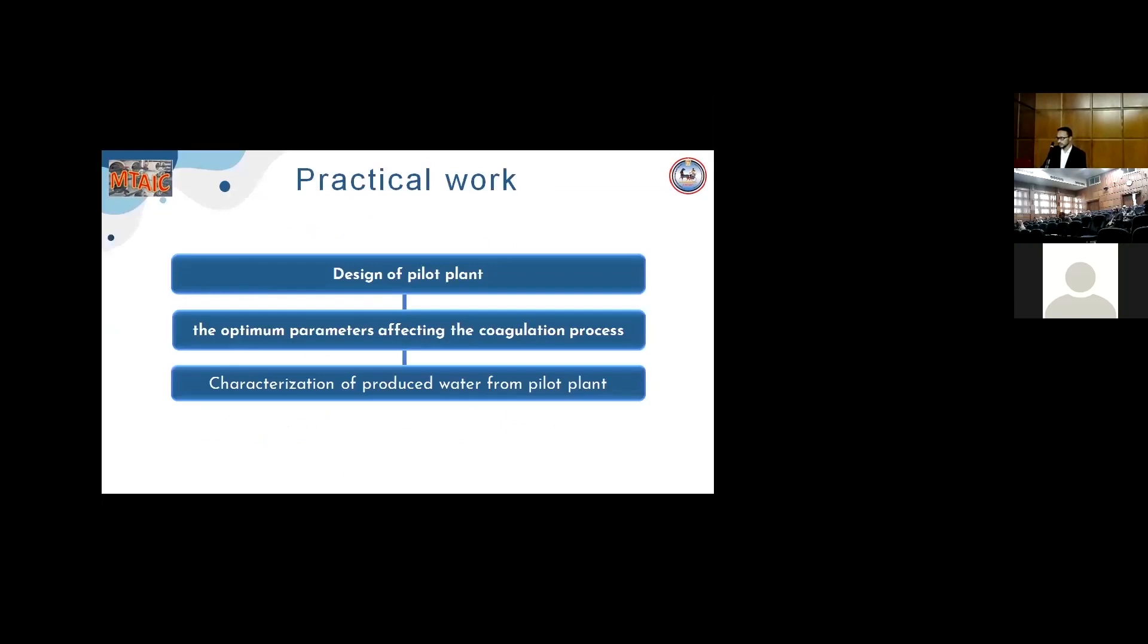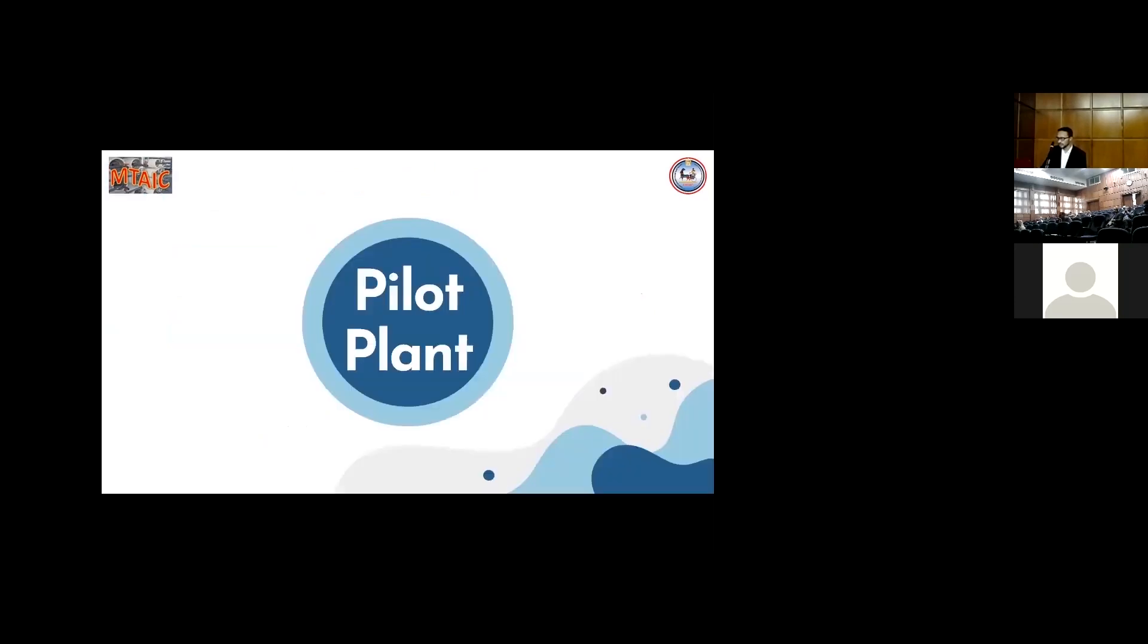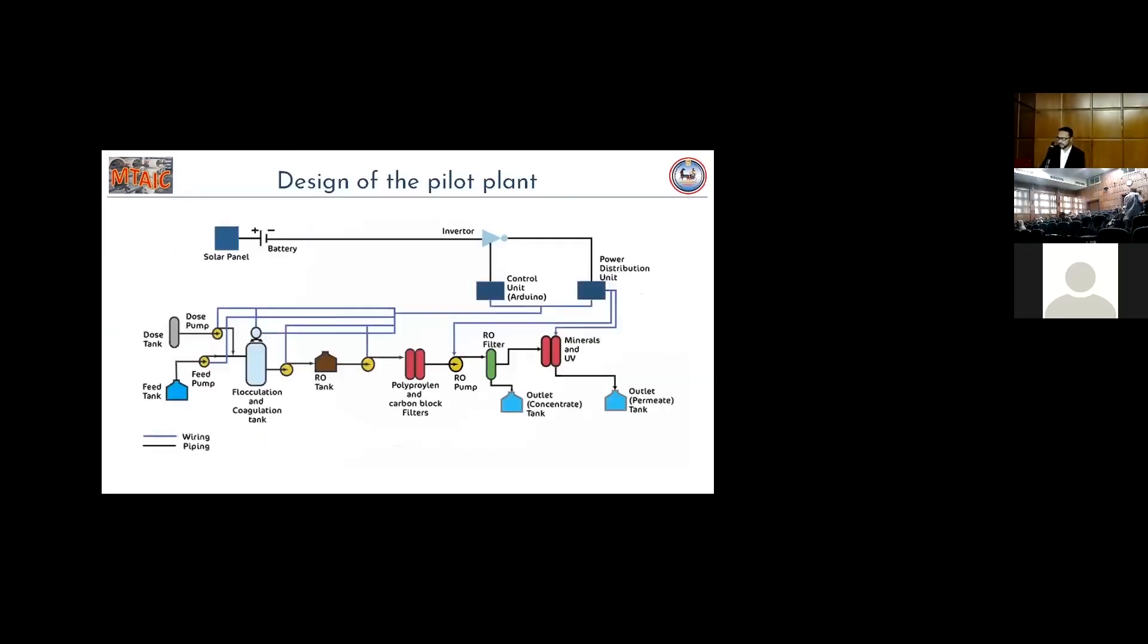The practical work includes the design of pilot plant, the optimum conditions for coagulation and flocculation in pilot plant, and the characterization of produced water. The pilot plant is used to simulate the real plant. The solar panels provide electricity to the battery. Inverter converts the DC to AC. The feed is pumped from the feed tank to the coagulation tank, where the alum is introduced to remove the iron. And the stirring is done to mix the water with coagulant, and then left to settle.